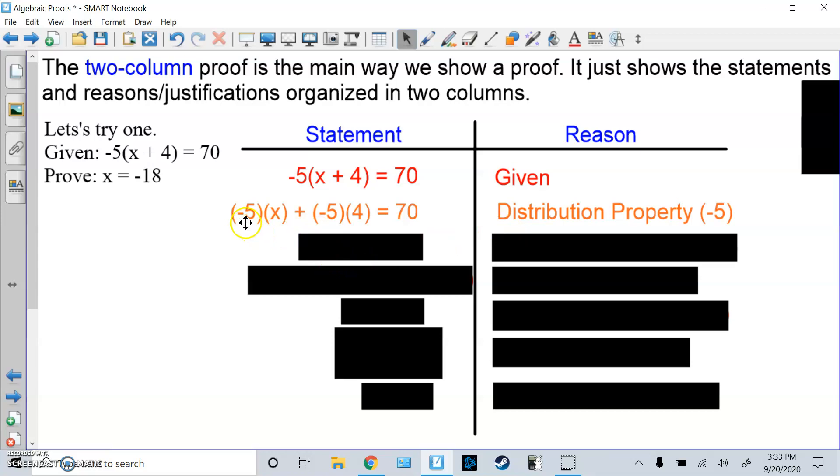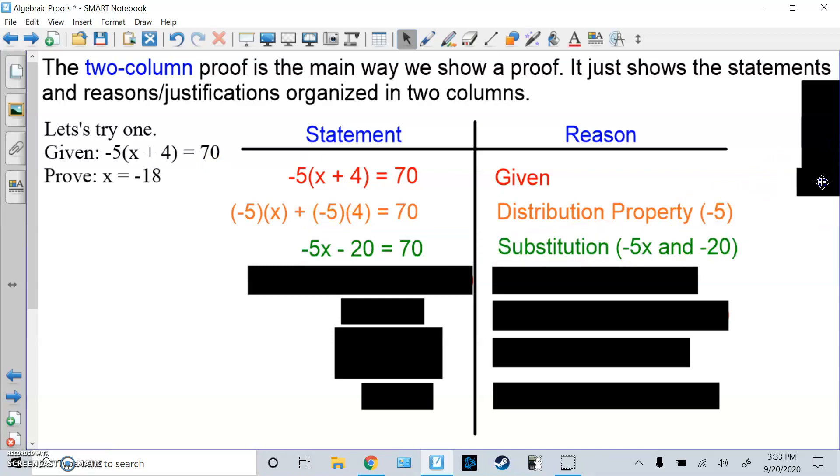From here, you'd multiply -5 times X is -5X, -5 times 4 is -20. Now that is called substitution, because we're replacing -5(X) with -5X, and -5(4) with -20. It's simply simplifying.